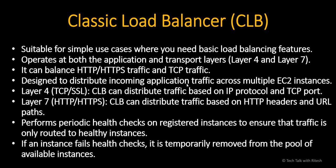It is designed to distribute incoming application traffic across multiple EC2 instances. At Layer 4, which is TCP and SSL, CLB can distribute traffic based on IP protocol and TCP port. At Layer 7, which is HTTP or HTTPS, CLB can distribute traffic based on HTTP headers and URL paths.